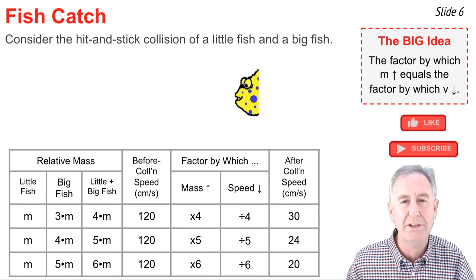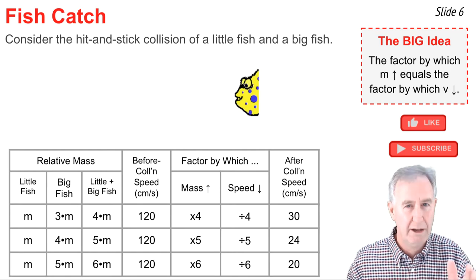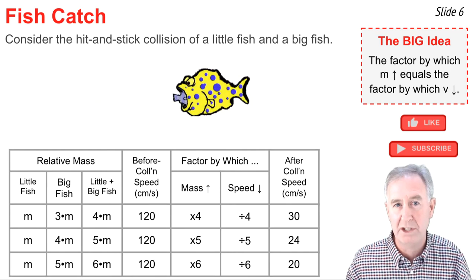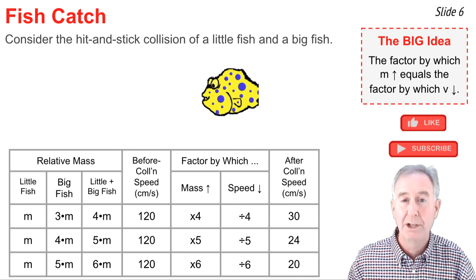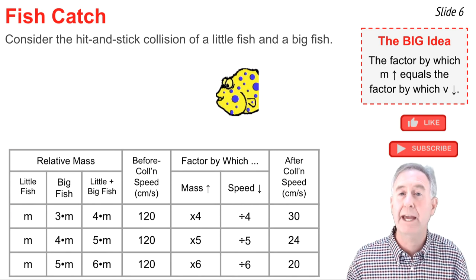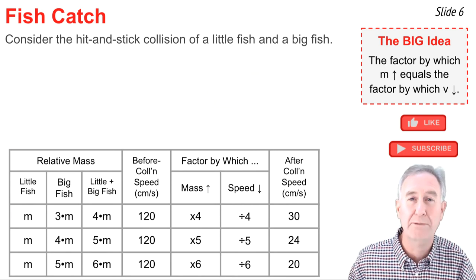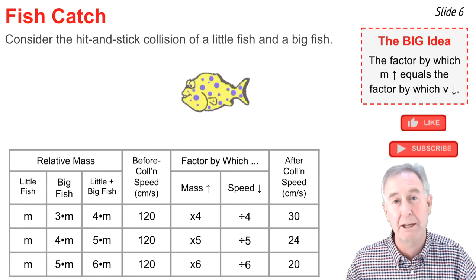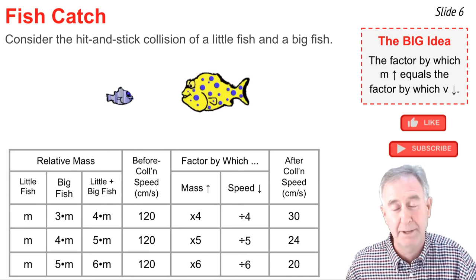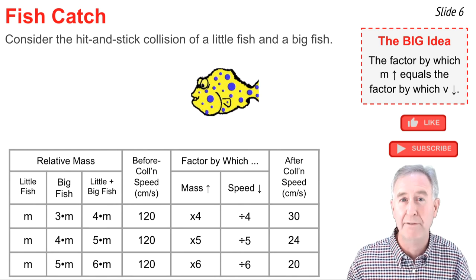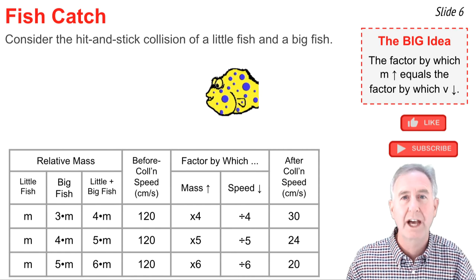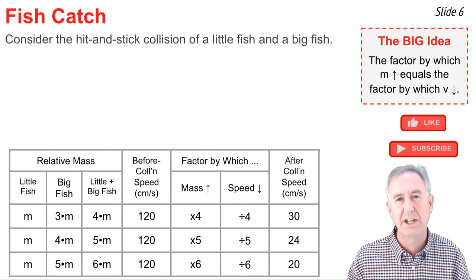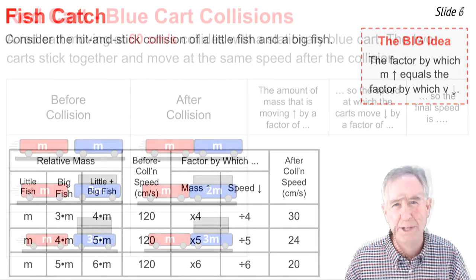In the last fish example, a fish of mass m collides with a big fish of mass 5m. The amount of mass moving increases by a factor of 6 — from m to m plus 5m. So we take 120 and divide by 6 to get 20 cm/s.